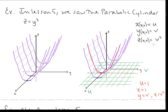What happens when v is constant? Let's say v equals 2. Then we get x equal to u, y equal to 2, z equal to 4. v equals 2 looks like this line. And where does this line get mapped? It gets mapped to x equals u, y equals 2, z equals 4 — so y must equal 2, z must equal 4, and that's going to be this line coming forward and back in the parabolic cylinder.